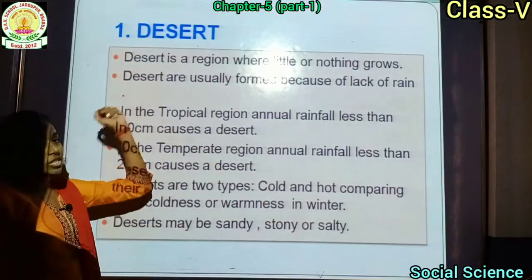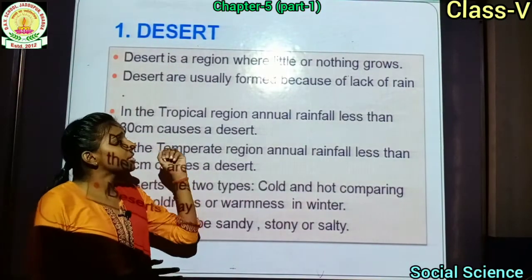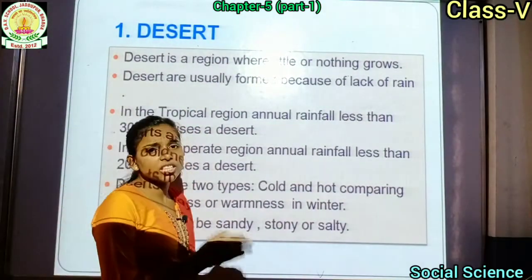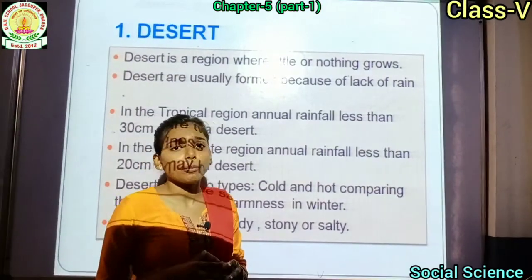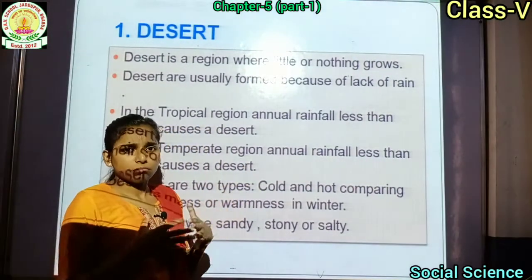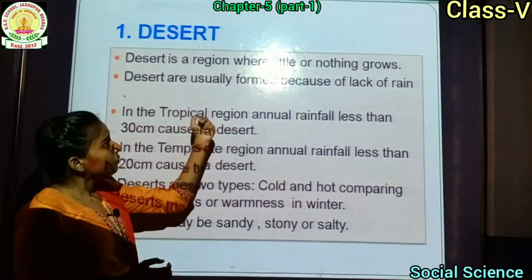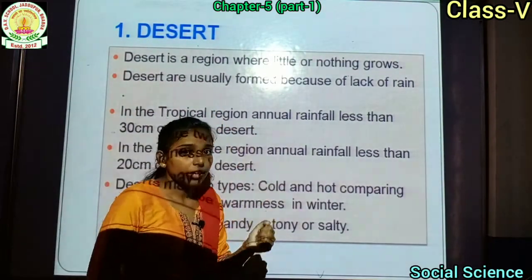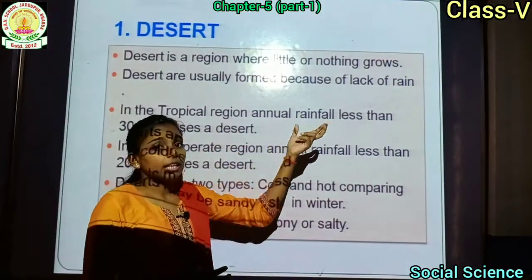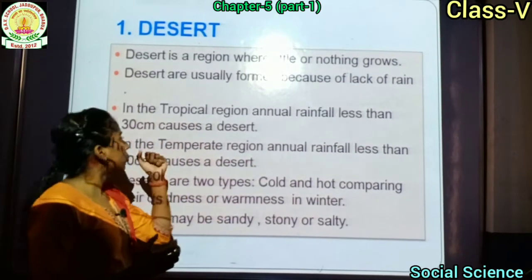The first topic is desert. What is desert? Desert is a region where little or nothing grows. Deserts are usually formed because of lack of rain — बारिश की कमी की वजह से desert form होता है.